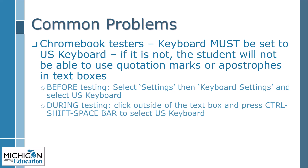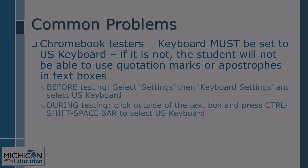Students testing on Chromebook with the wrong keyboard setting — U.S. International Keyboard — will not be able to use quotation marks or apostrophes in text boxes. To resolve this before testing begins, choose Settings on the Chromebook, then Keyboard Settings, and ensure U.S. Keyboard is selected. If this happens during testing, have the student click outside of the text box, then press Ctrl-Shift-Space bar, which will bring up the option to select the U.S. keyboard setting.